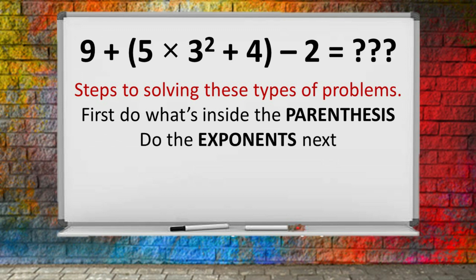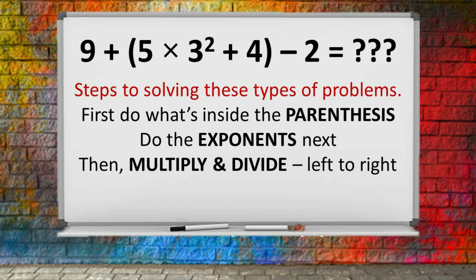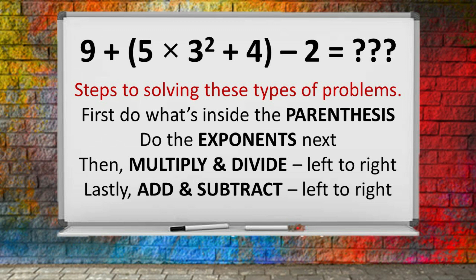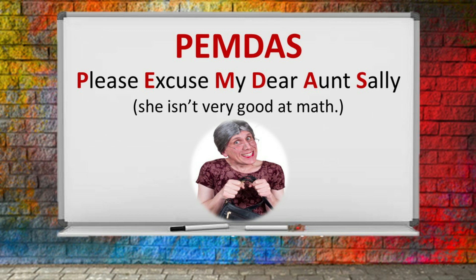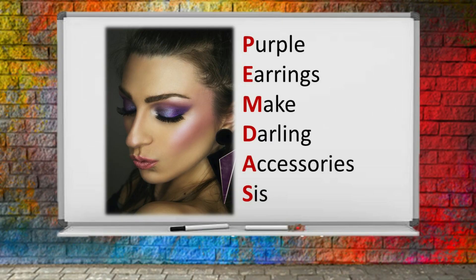Then the exponents — your powers and square roots, etc. Multiplication and division, going from left to right, and then addition and subtraction. Parentheses, exponents, multiply, divide, add and subtract turns into the nonsense word PEMDAS. But we can turn that nonsense word into a phrase: "Please excuse my dear Aunt Sally." Here's one I came up with: "Purple earrings make darling accessories, sis." The key here is to take every initial and turn it into something that's memorable.